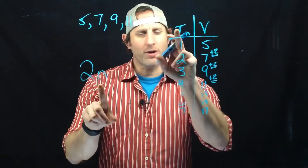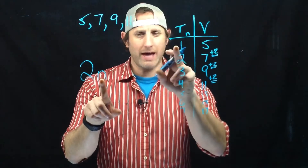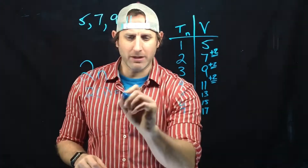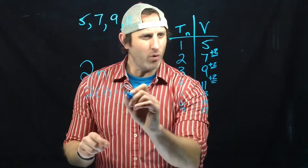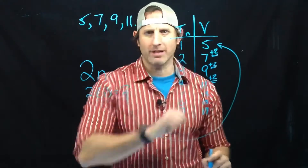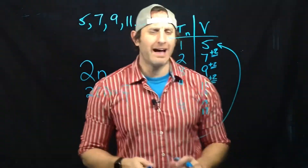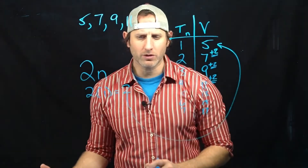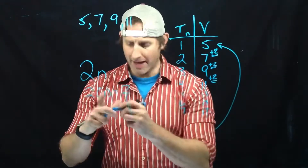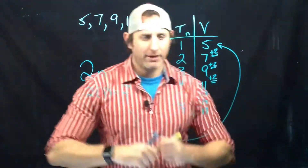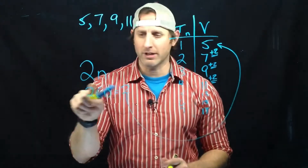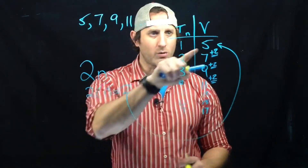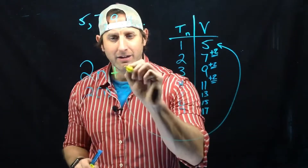This is a pattern rule, but is it the right pattern rule? That's what we need to figure out, so let's plug in some numbers. If we take term 1 and plug it in: 2 times 1 gives me 2. But I don't want 2, because term number 1 did not have a value of 2 — it had a value of 5. So I'm going to need to adjust my pattern rule.